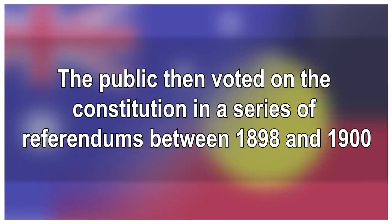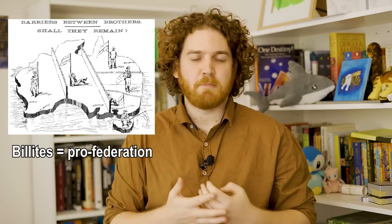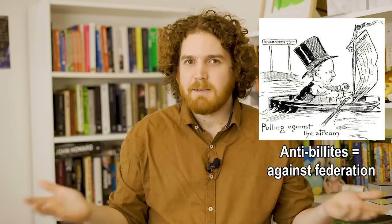Now came the time that every writer dreads — getting someone else to read it over and tell you if it's any good. The public would go to vote in a series of referendums between 1898 and 1900. A referendum is where the public votes on a constitutional change — in this case it was about all of it at once. Australia was the first nation to take a proposed constitution to a referendum. It was Charles Kingston who proposed the idea that the public should vote on whether or not that was a good idea. Those who campaigned for the yes vote were known as Billites, for their support of the Commonwealth Constitutional Bill. And those who were against were known as anti-Billites.